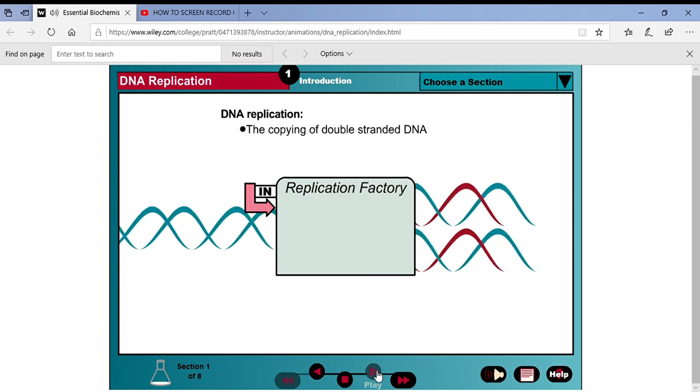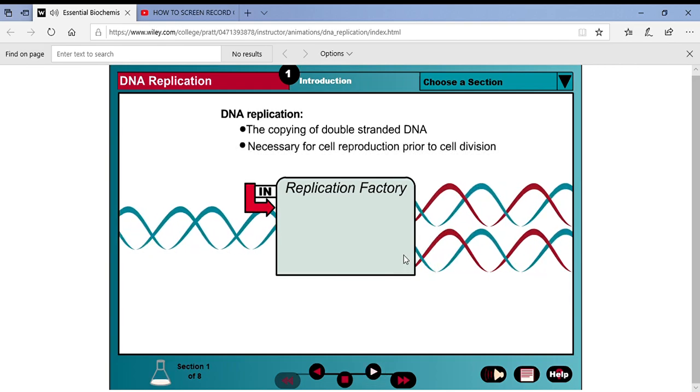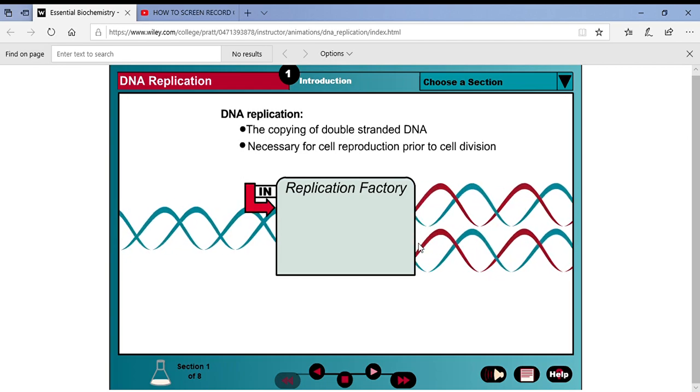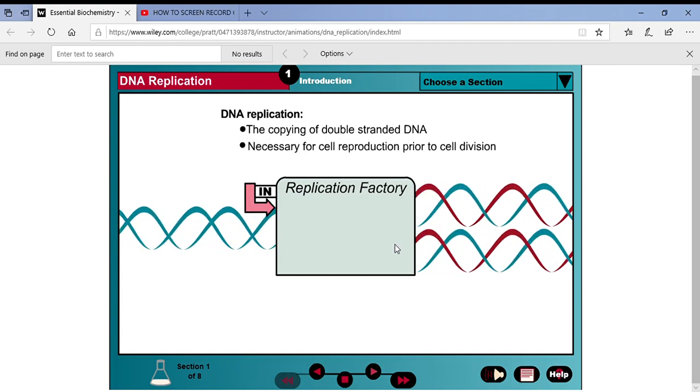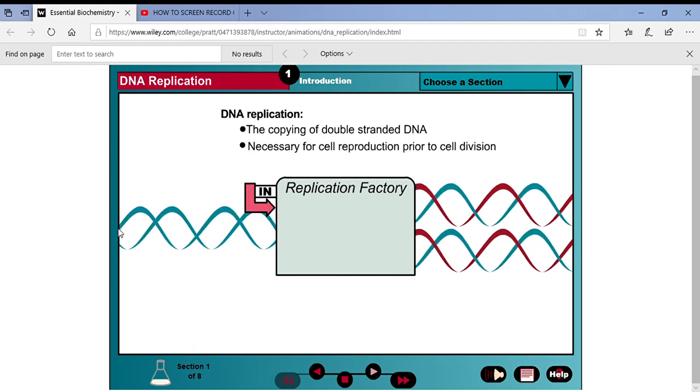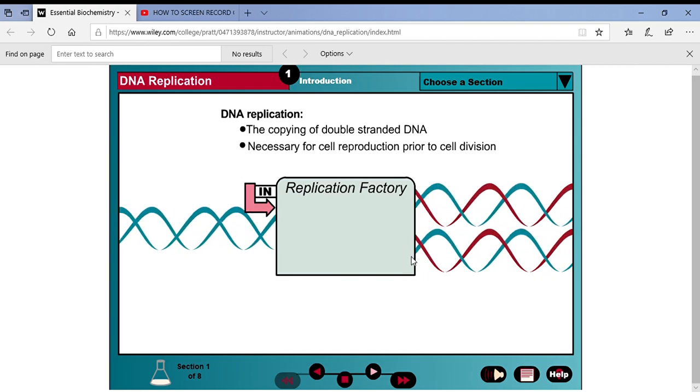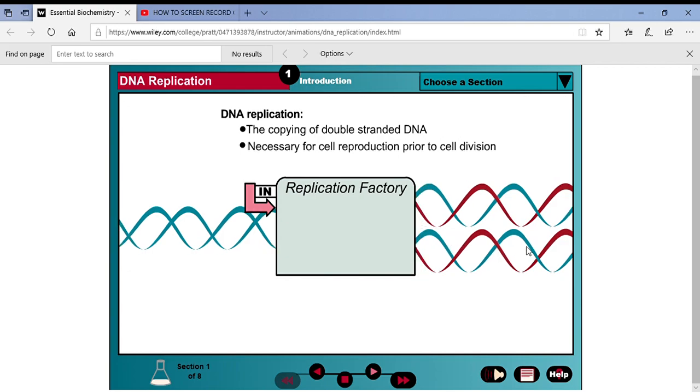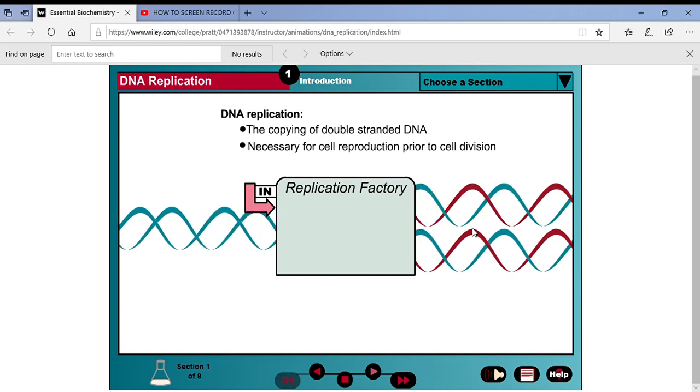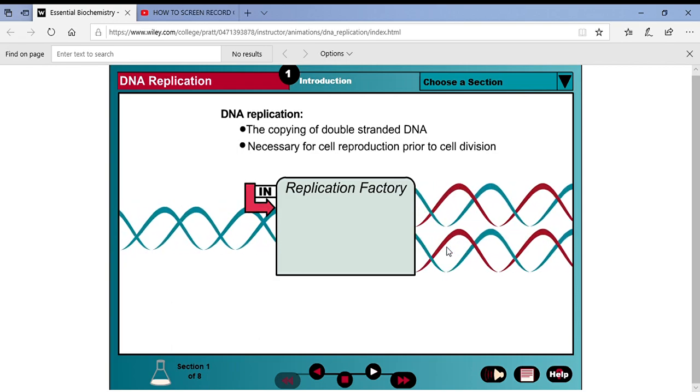The way DNA replicates is called the semi-conservative method. In other words, semi means half. The original blue molecule of DNA goes in and each new identical copy has one of the original blue strands of DNA and the red strand of DNA is made from new nucleotides from the food you eat.